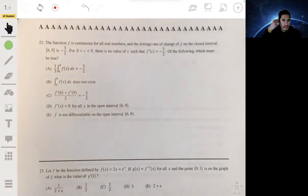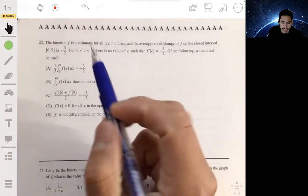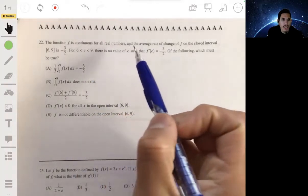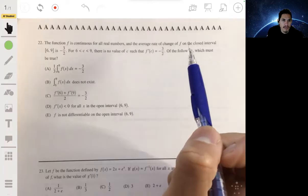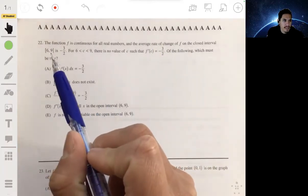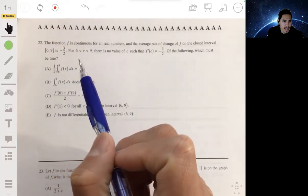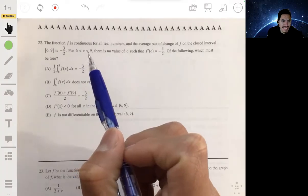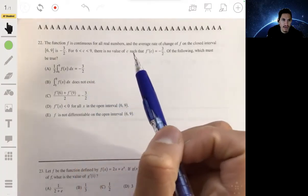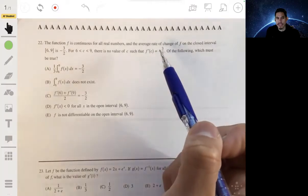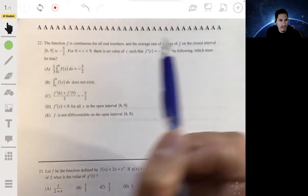All right, so in problem 22 it's talking about a function that's continuous and it says the average rate of change on the closed interval from six to nine is negative three halves. And it's saying for c between six and nine there's no value of c such that f prime of c is negative three halves.